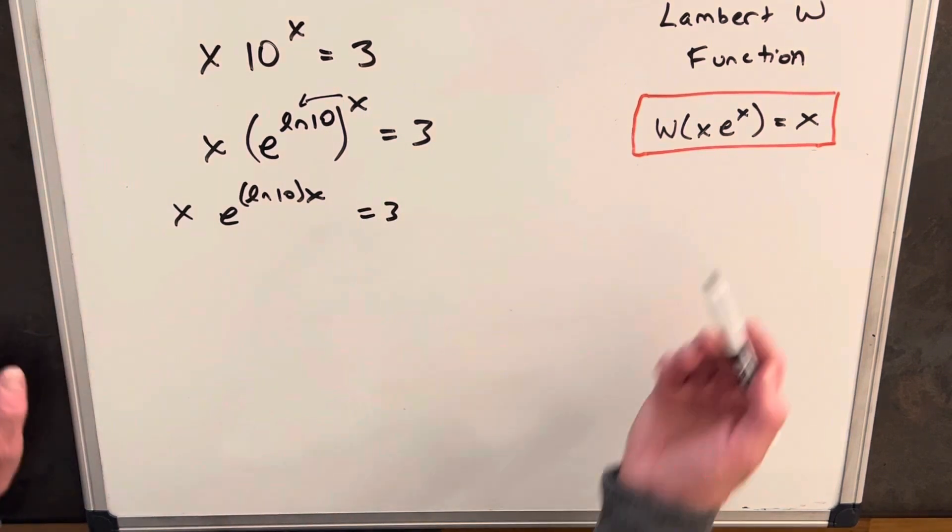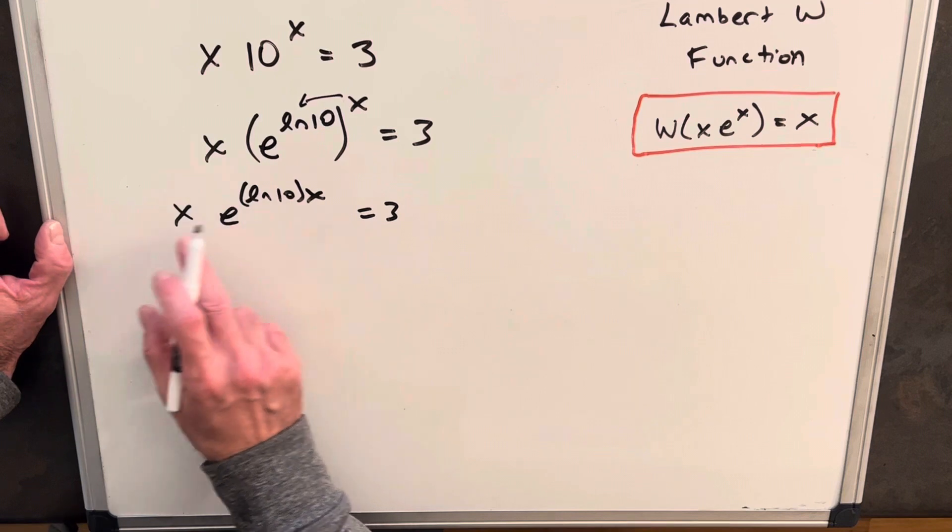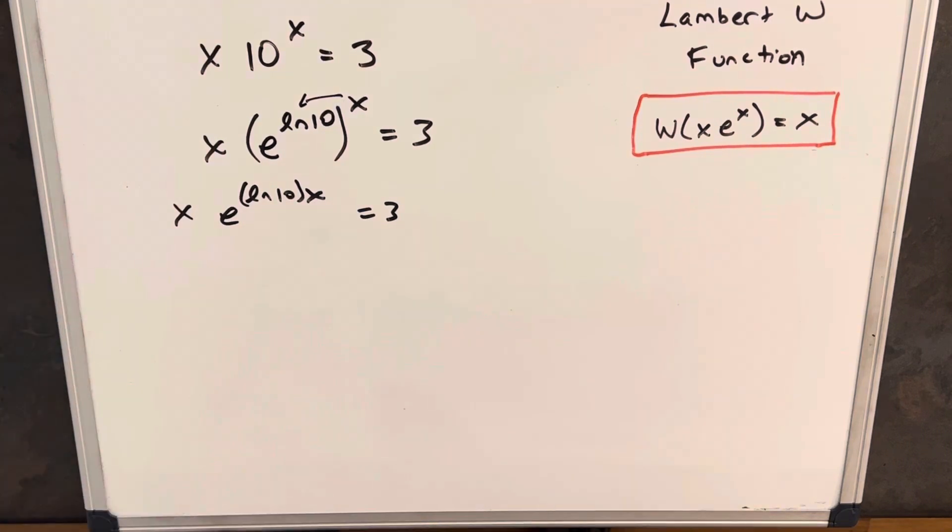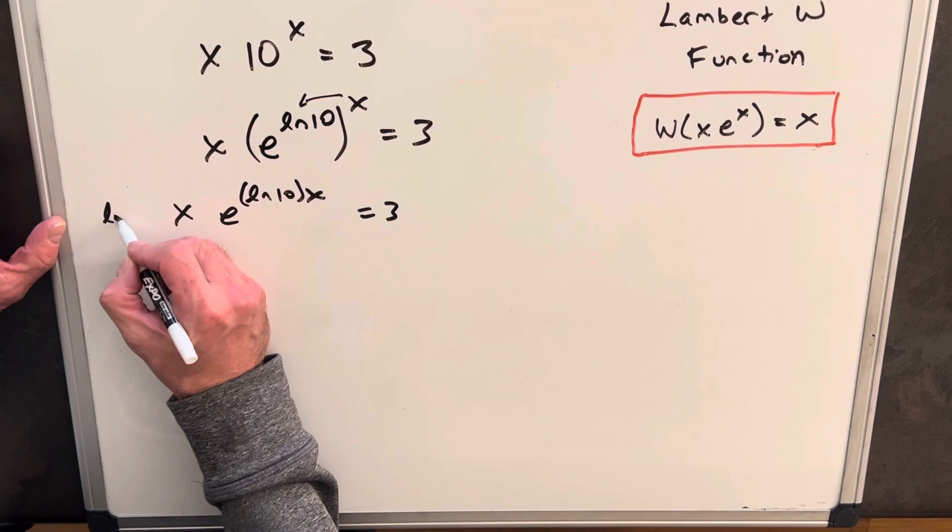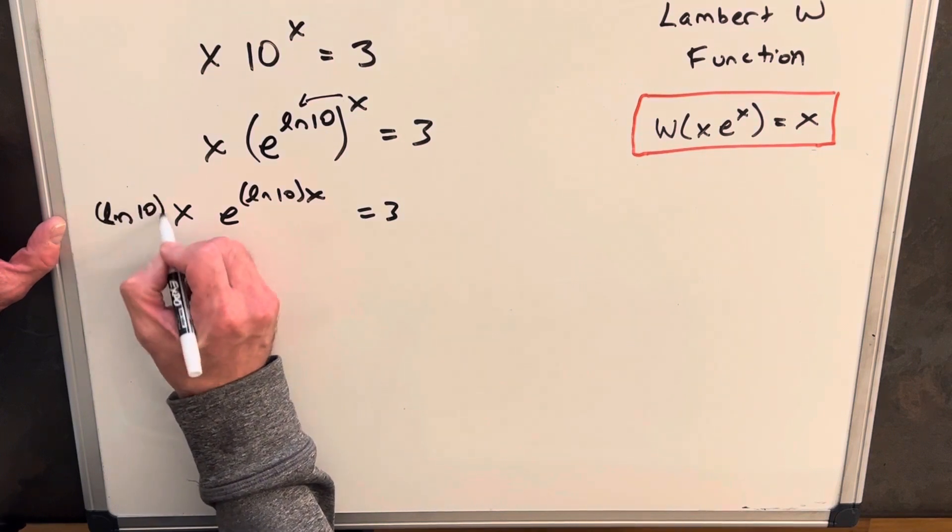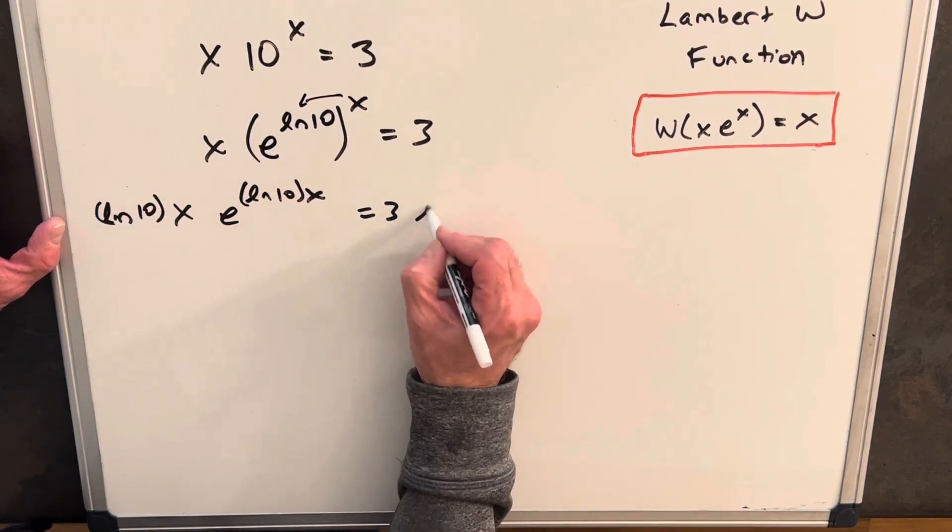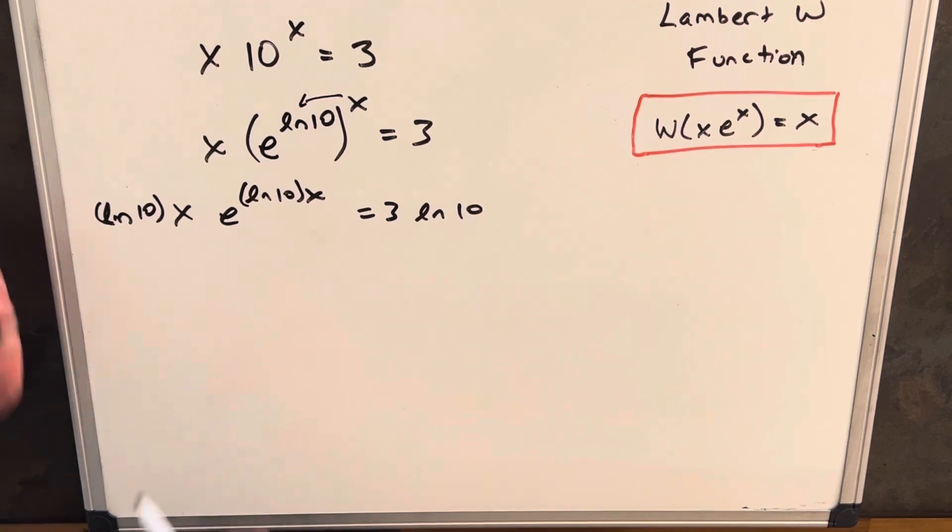And now we're getting pretty close to this formula we want. We've got our e in the middle. We have x's in the exponent. All we need to do to make this work is multiply both sides by ln 10. And then you'll notice now we're matching the exponent and coefficient.